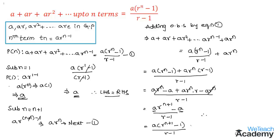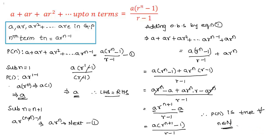We observe that P(n) is true implies P(n plus one) is true. Therefore we can conclude that P(n) is true for all n belonging to natural numbers. This was a basic introduction on how to solve such examples on mathematical induction. Hope you understood the concept. Refer to more videos on mathematical induction on our website vteachacademy.com. Thanks for watching. Till then, take care and goodbye.